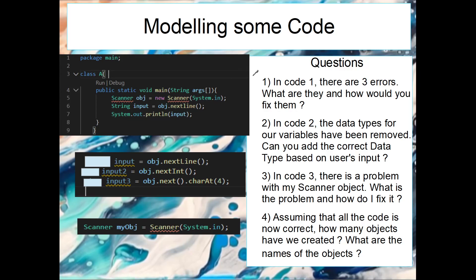Hopefully you've paused the video. Let's look at question one — there are three areas with issues. In the first area you can see there's a red line under Scanner, which means we cannot create this object because we don't have that class. So up here we need to put import java.util.Scanner — we need to add that import statement.